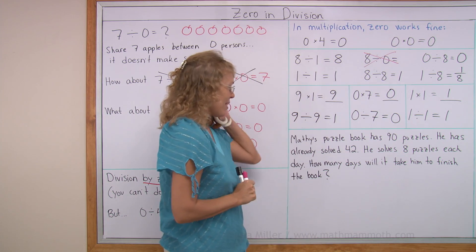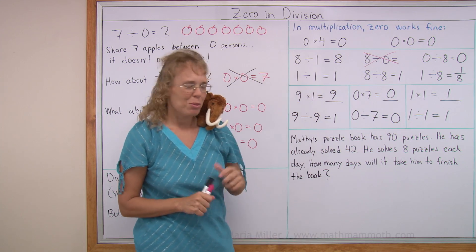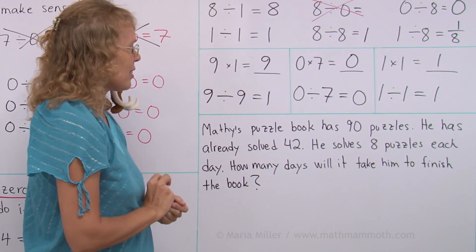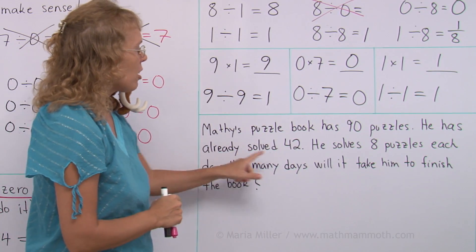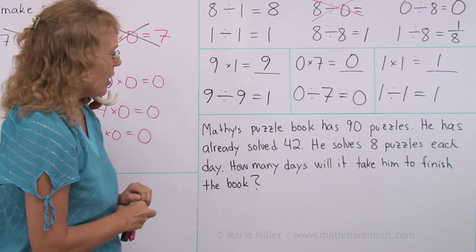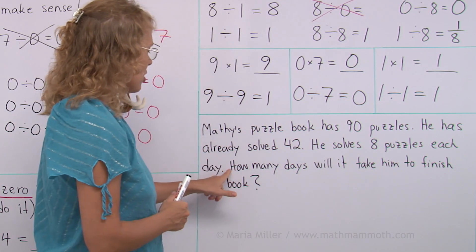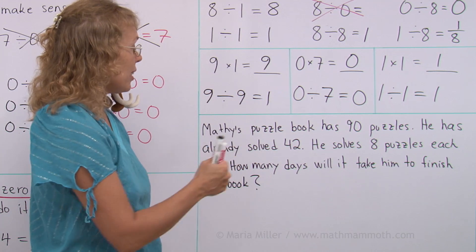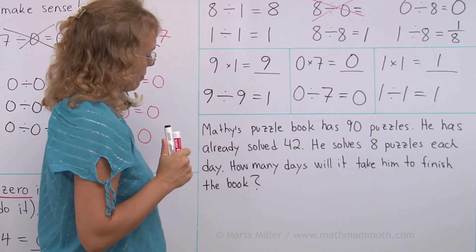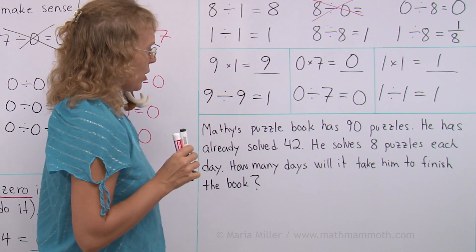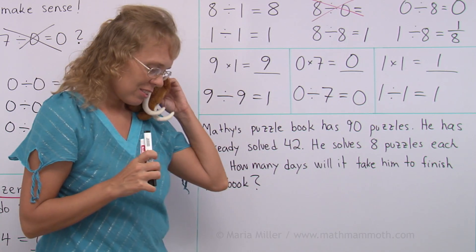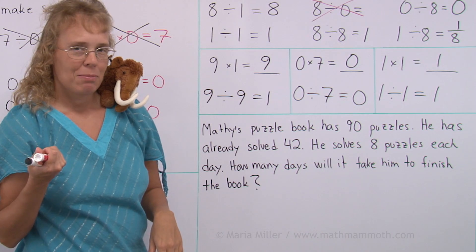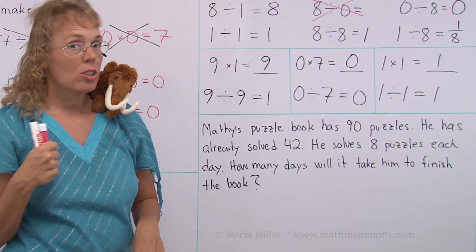All right. A word problem about Matthew. He loves puzzle books. He loves math and puzzles. Matthew's puzzle book has 90 puzzles. He has already solved 42. He solves eight puzzles each day. He's gonna solve eight puzzles each day now. How many days will it take him to finish the book? You enjoying your puzzles? Oh, he says he is. He's already solved 42 puzzles.